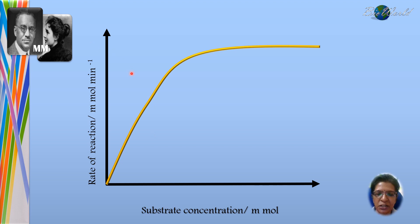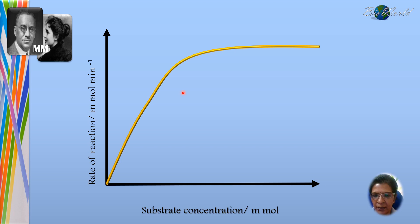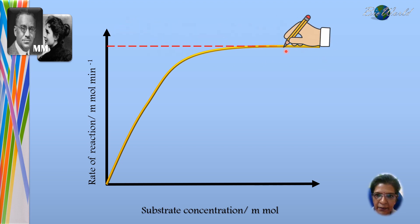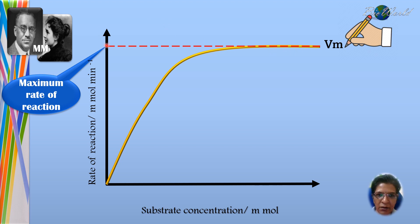The Michaelis-Menten curve is a curve in which the x-axis is substrate concentration and the y-axis is rate of reaction. Next, let's find out how to determine Vm and Km values. We start with the Vmax value. To determine Vmax, we look at the constant part of the curve, draw a line, and the value of the rate of reaction at that point is considered the maximum rate of reaction, symbolized by Vmax or Vm for short.